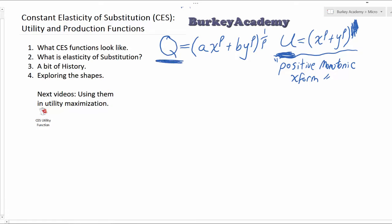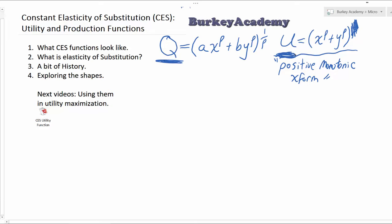If you ever have a problem where somebody wants you to do a utility analysis and they give you this constant elasticity of substitution function with the 1 over rho there, and you just want to check your answers, just do the same problem but erase the 1 over rho and make sure that your X and Y solutions check out.